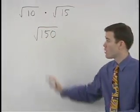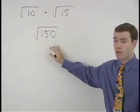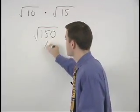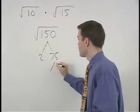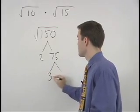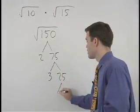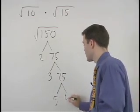Next, break down the square root that you end up with. 150 is 2 times 75, 75 is 3 times 25, and 25 is 5 times 5.